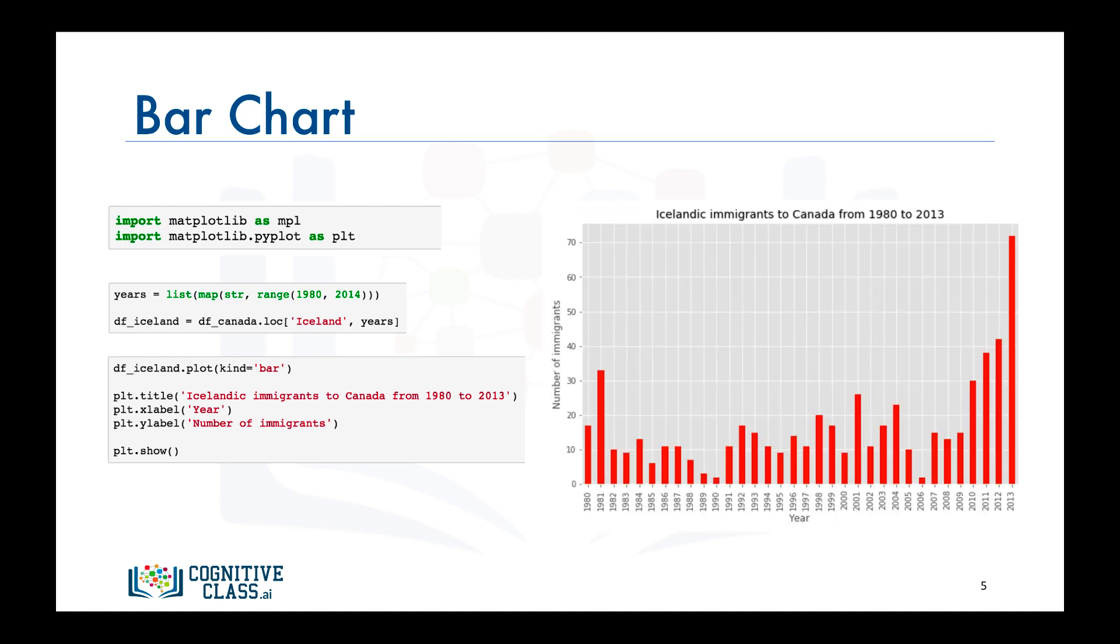And there you have it, a bar chart that depicts the immigration from Iceland to Canada from 1980 to 2013.